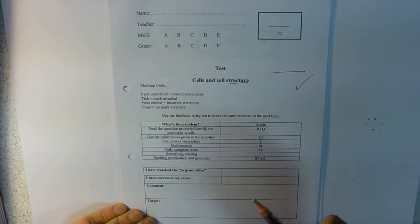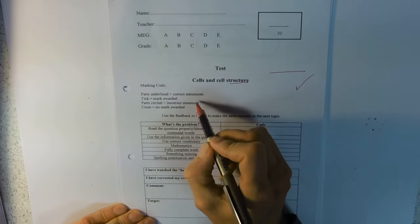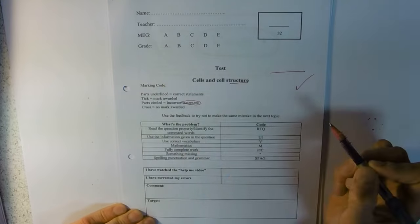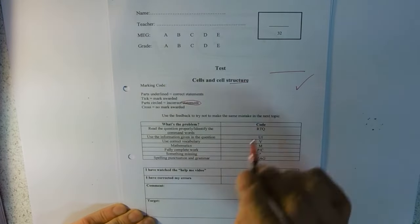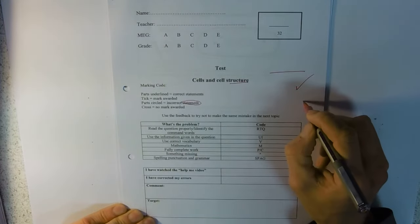We award ticks if the mark is there, and you can count up your ticks. If anything's wrong then we will put a circle around it to show you that bit's wrong, and if we're not giving you a tick, we'll put a cross.